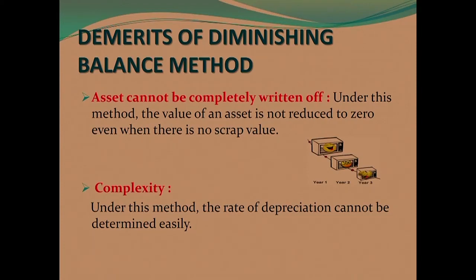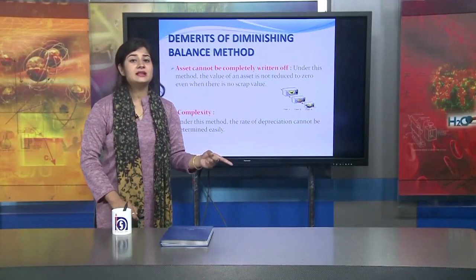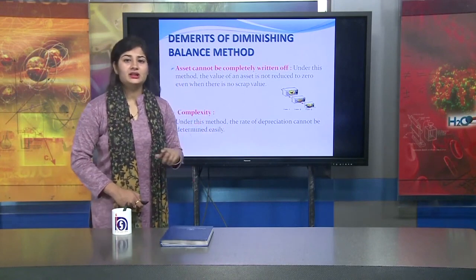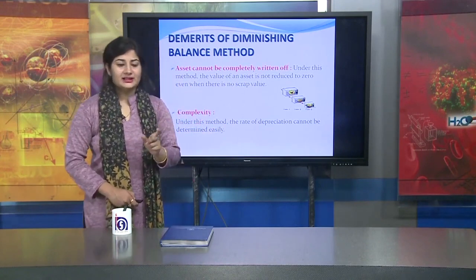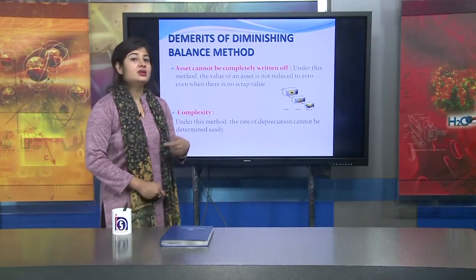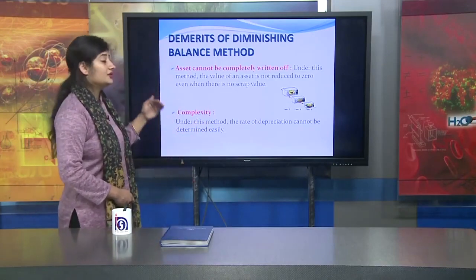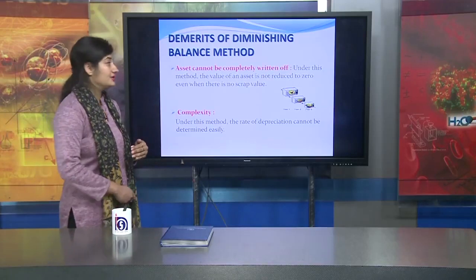Another demerit is complexity in calculation. Under this method, the rate of depreciation cannot be determined easily. In SLM, we could very easily calculate the rate of depreciation using a straightforward formula. But here, it is difficult to calculate the rate of depreciation under the Diminishing Balance Method.